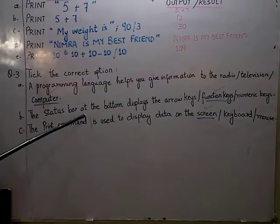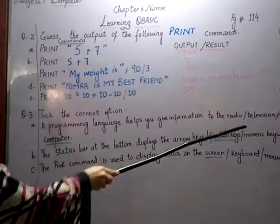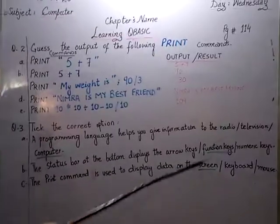B, the status bar at the bottom displays the arrows keys, function keys or numeral keys. The second one will be correct, function keys.